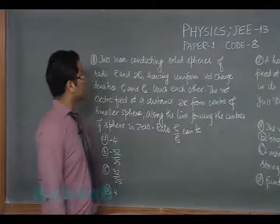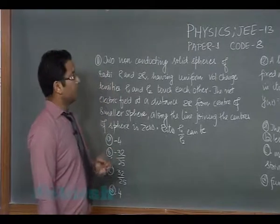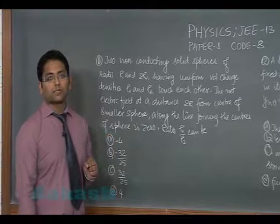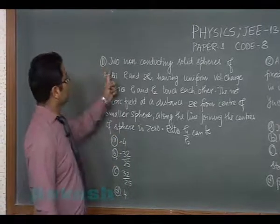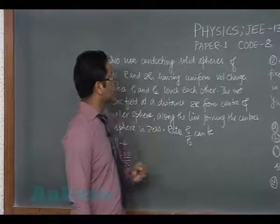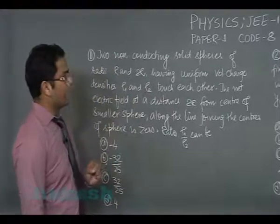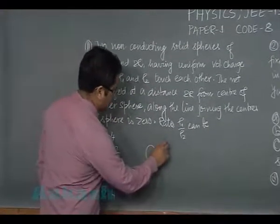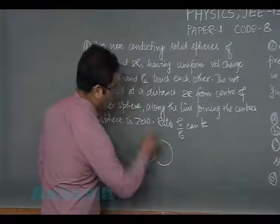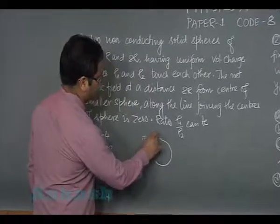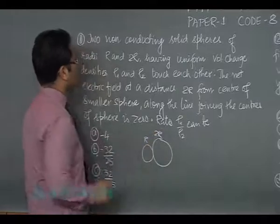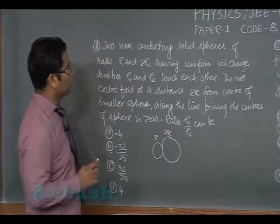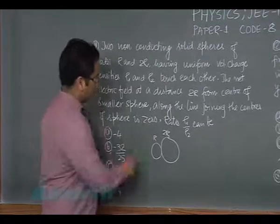Alright, now let's go to question number 11 that will begin section 2 where more than one option may be correct. Two non-conducting solid spheres of radii r and 2r having uniform volume charge densities rho 1 and rho 2 touch each other.